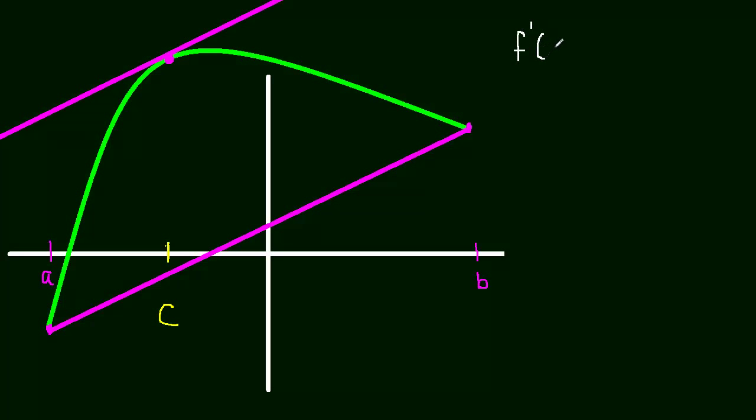So F prime of C. In other words, the slope of the function at C. Actually, let me move that over a little bit. I need a little bit more room. So the slope at C is equal to the slope of the secant line. And what's the slope of the secant line?